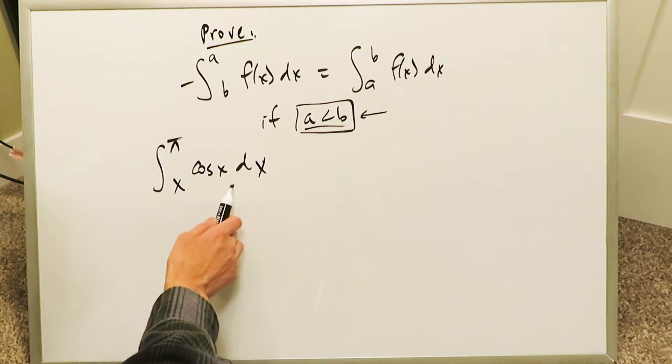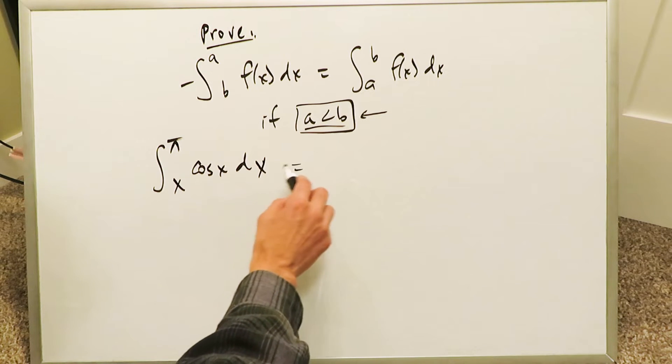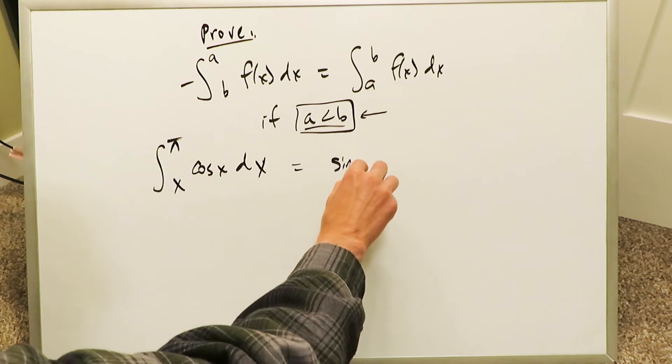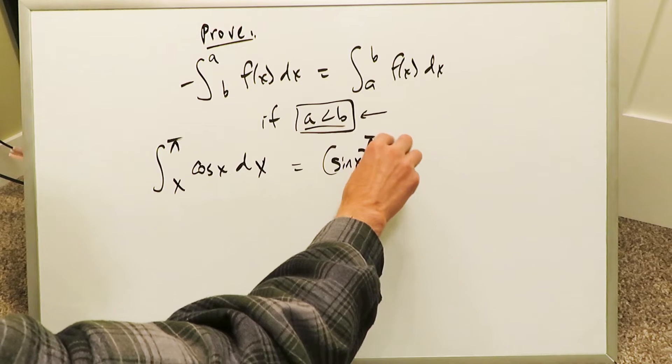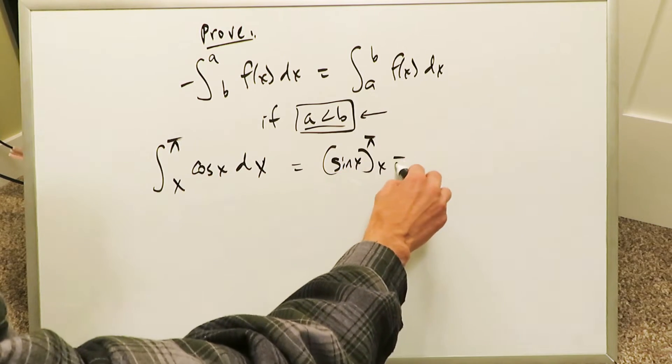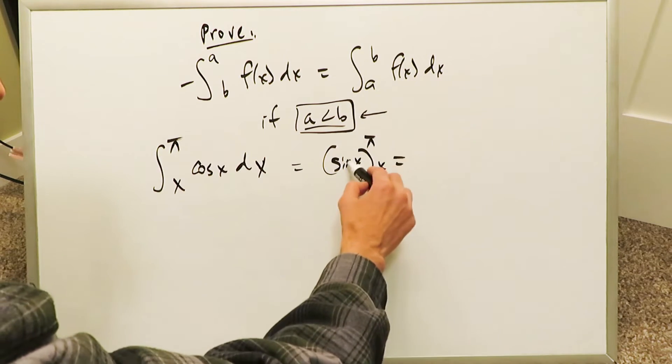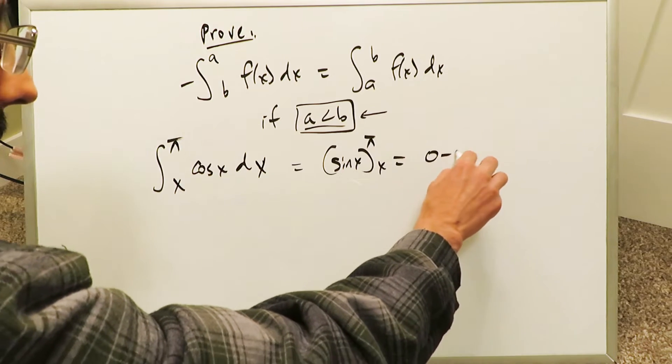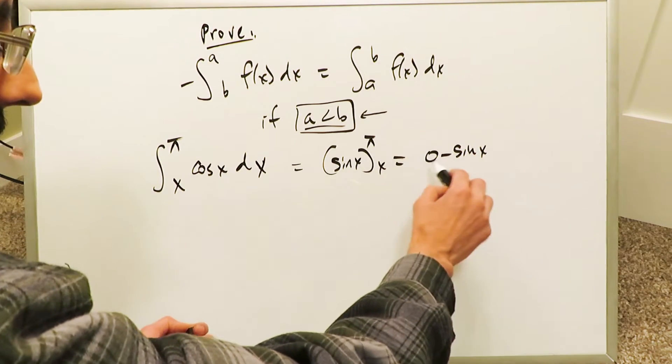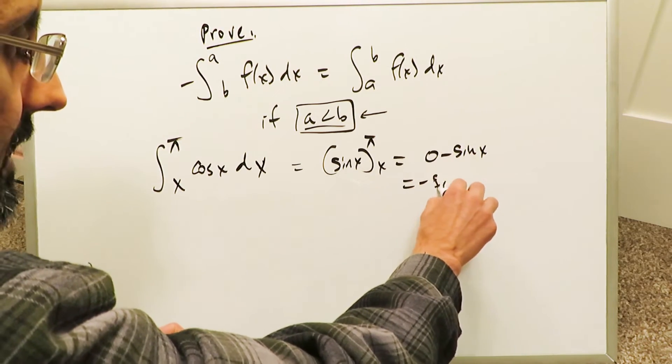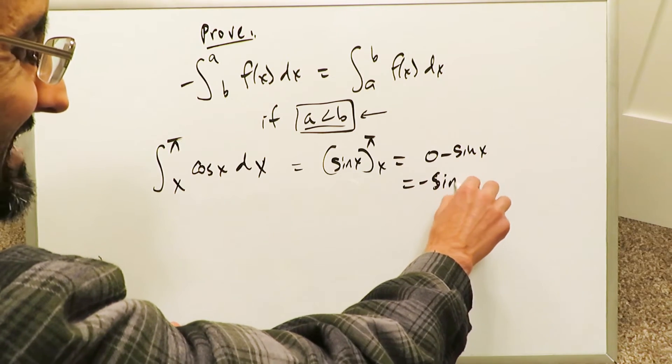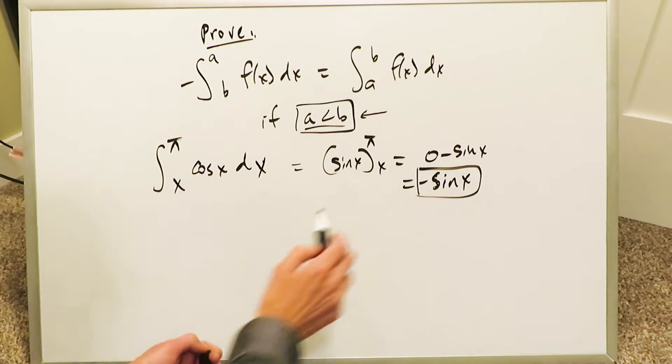If you were to do the definite integration of this, sine x would come out as the anti-derivative and you'd be looking at everything as π and x upper and lower limit, and you do the difference of the two. You do sine of π, which is zero, minus sine of x, whatever that might be, but your end result would be negative sine x. That right there is my end result.